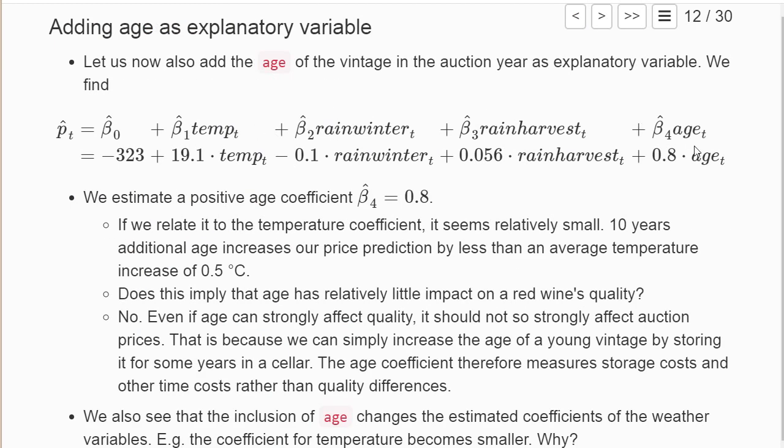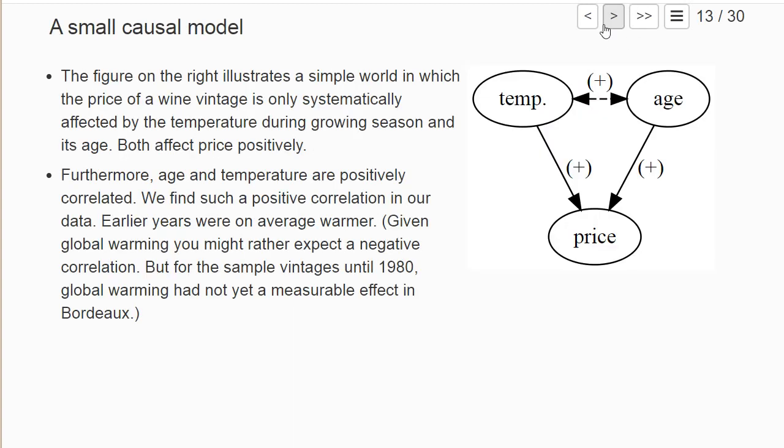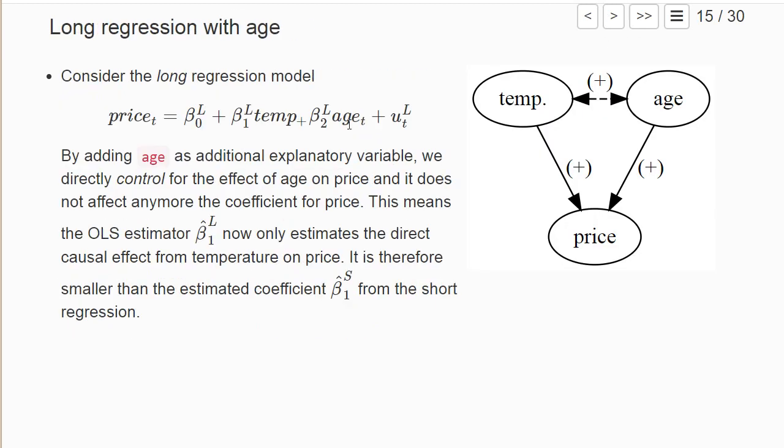If we run the long regression where we control for h, our coefficient in front of temperature becomes smaller because now we control for this indirect positive effect. That's exactly what I explained here, only a bit more complicated because we added rainfall variables, but they don't change the basic idea.